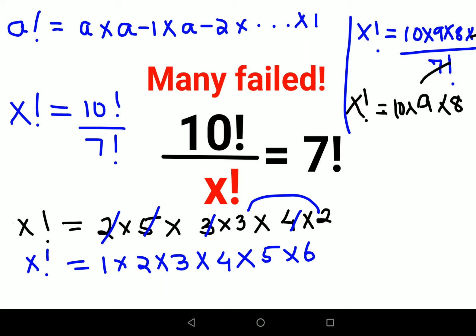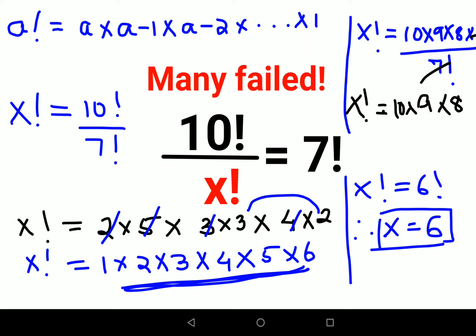Now we know that this is nothing but the expansion of which factorial? Yes, you guessed it right. This is nothing but expansion of 6 factorial. So therefore, the value of x is nothing but 6. I hope this is very clear to everyone. That's it for today. I will see you in the next video.